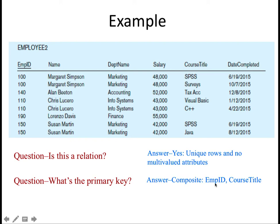This relation is not well-structured because there is some repetition. With the same employee ID, the same name, the same department number, and same salary — multiple things are being repeated for the same individual. So these are the types of things that we want to avoid.